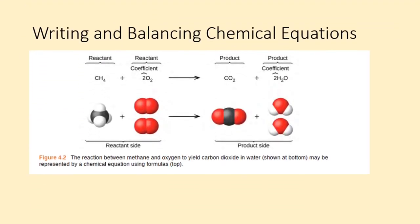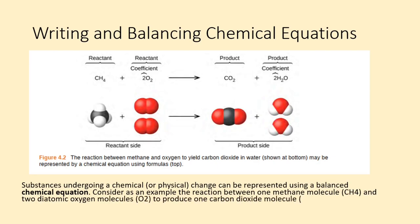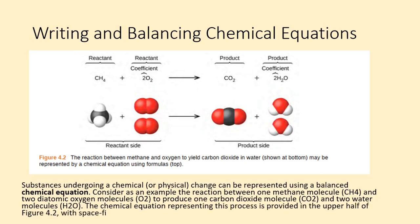Pay close attention as this section can be challenging for some. Substances undergoing a chemical or physical change can be represented using a balanced chemical equation. Consider as an example the reaction between one methane molecule (CH4) and two diatomic oxygen molecules (O2) to produce one carbon dioxide molecule (CO2) and two water molecules (H2O). The chemical equation representing this process is provided in the upper half of figure 4.2, with space-filling molecular models shown in the lower half of the figure.